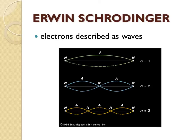Most of the ideas in the quantum mechanical model come from Irvin Schrödinger. Schrödinger described electrons as waves. This is different than the Bohr model, where the electron was treated as a particle.